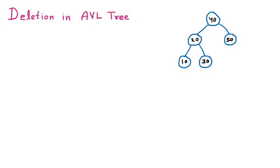Now we are discussing the topic of deletion in AVL tree. Whenever we are going to delete a certain node from the AVL, this is called deletion in the AVL. After deletion, the balancing factor of any node may be affected and the tree may become unbalanced.